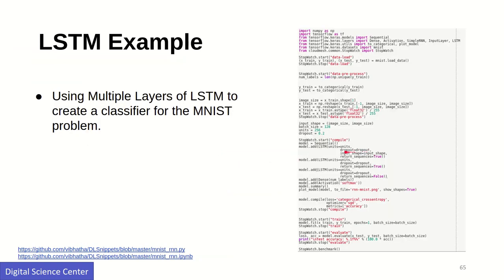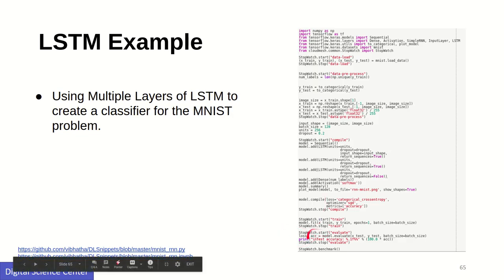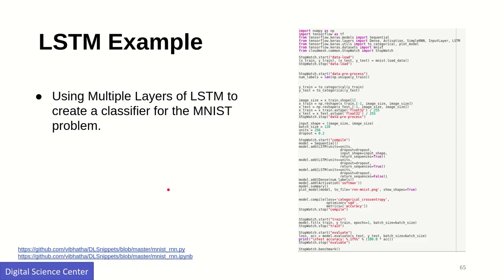You specify the input shape and again set the return_sequence parameter to True — this is a programming aspect of using this API. This is again followed by a dense layer and a softmax layer. Finally, you get the training model, train it, and get the accuracy. The code for LSTM is also available from the following links.